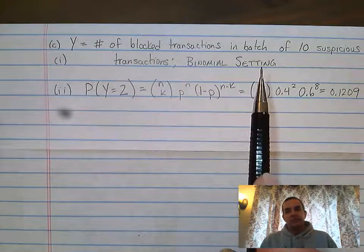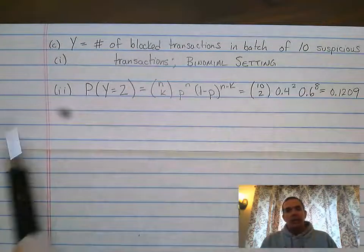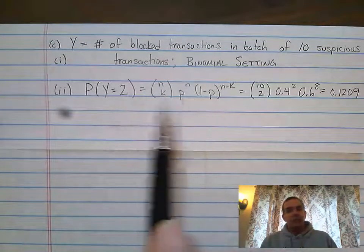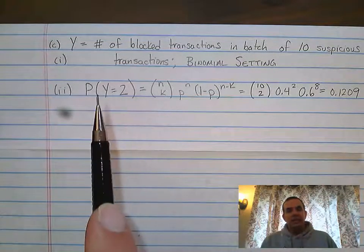And it is a binomial setting because we have a fixed number of trials, 10, and we're counting the number of successes in this case, two. So what we needed to do next was the actual binomial calculation.